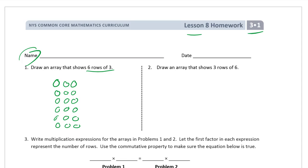Then draw an array that shows three rows of six. So I'm going to start off with one row of six first, one, two, three, four, five, six. And now I need two more to make three rows. One, two, three, four, five, six. One, two, three, four, five, six.